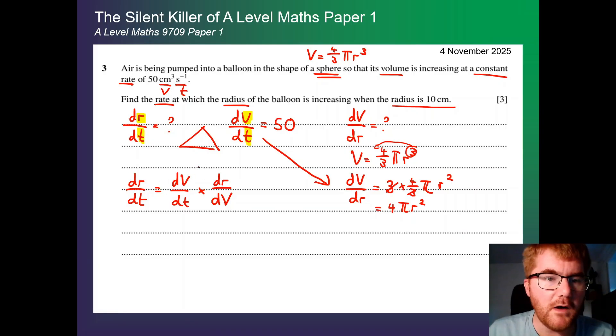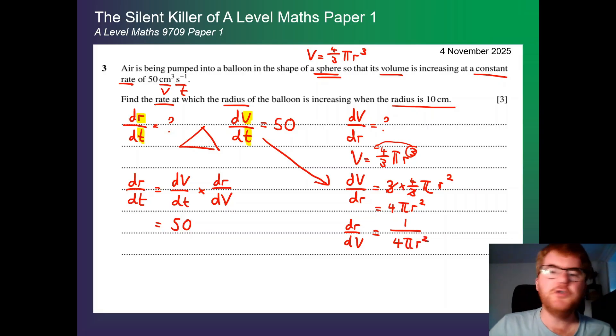Now, you might be asking here, well, dv by dt I have. I have got that as 50. But I don't have dr by dv. I have dv by dr. Well, we can do a nice little trick here. So if we want to do dr by dt, just like with fractions, we then just flip this. We find the reciprocal. So 1 over 4 pi r squared. You do this with fractions. So if you flip the fraction, it's the same as flipping the other side as well. So we can actually go from dv by dr to dr by dv. So we actually do have what we need.